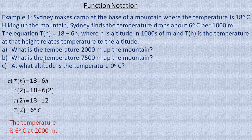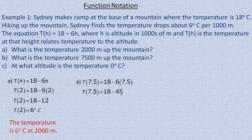In part B, we're asked to find the temperature at 7,500 meters up the mountain. 7,500 meters is 7.5 thousands, so we put 7.5 in place of h. 6 multiplied by 7.5 is 45, so 18 minus 45 is negative 27. The temperature at 7,500 meters up the mountain is negative 27 degrees Celsius.